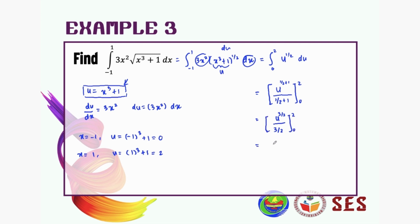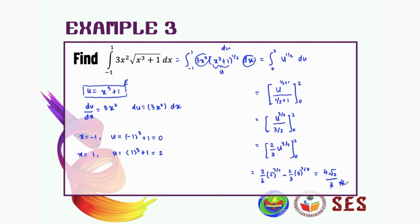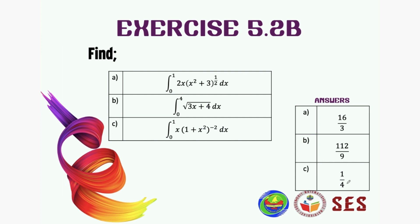So this is 2/3 times u to the power of 3/2, evaluated from 0 to 2. Substituting the upper limit: 2/3 times 2 to the power of 3/2, minus the lower limit 0 to the power of 3/2, giving the answer 4√2 divided by 3. That's the end of chapter 5 on integration. Here are some exercises for you to try — good luck and bye bye!